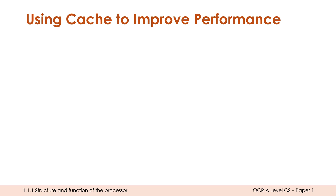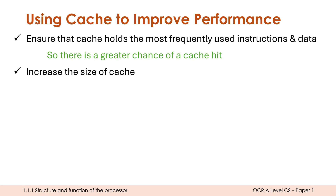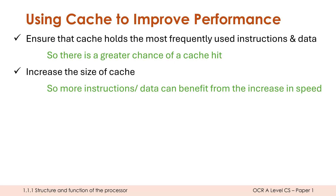If you want to use cache to improve performance, your first job is to make sure it's actually holding things which are going to get used. It should hold the most frequently used instructions and data. The reason we choose the most frequently used is this means there's a greater chance of a cache hit. If we waste valuable cache capacity with something barely ever used, we won't benefit much because most of the time we'll be getting cache misses. Another way to utilize cache is to make it bigger. If you buy a more expensive CPU, it will have more cache — bigger cache is a good thing.